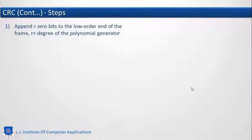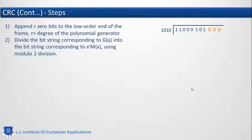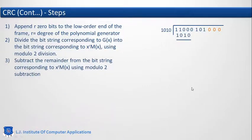Now see the step-by-step calculation. The first step: append zeros after the data. The number of zeros to add depends on the generator bits. Our generator is 4 bits, so we add 3 zeros — equivalently, the maximum power of the polynomial was x³, so we add 3 zeros. The second step: divide the bit string by the generator polynomial using Modulo 2 arithmetic, which is equivalent to XOR operations rather than normal binary subtraction.